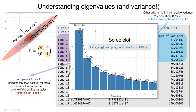A more visual way to examine eigenvalues is using the function fviz_eig from FactoExtra. Here you can see the same information — 27% for the first component — and count how many components you need to overcome the 70% threshold.